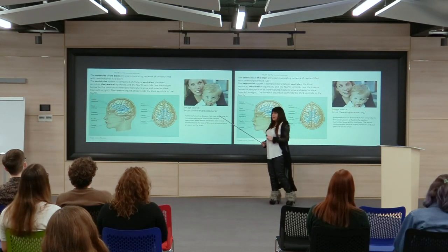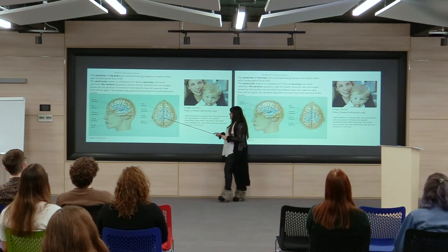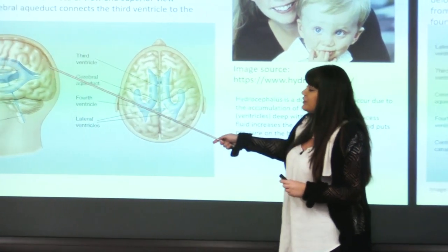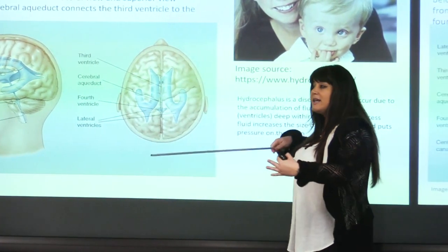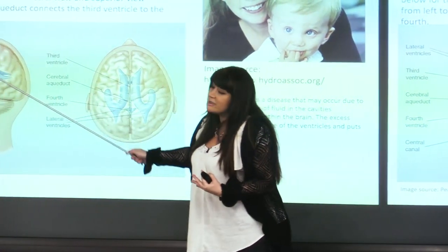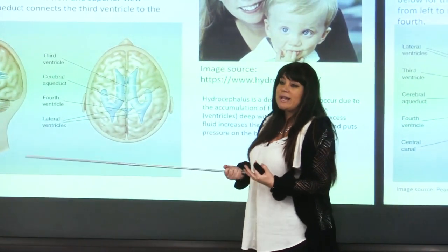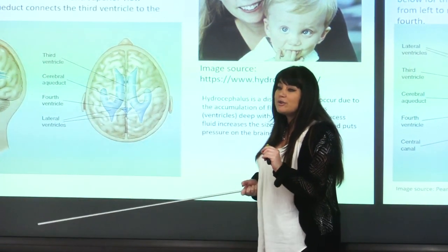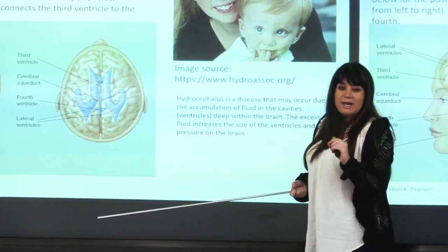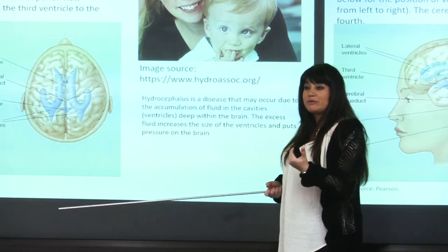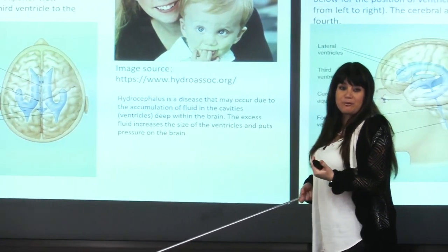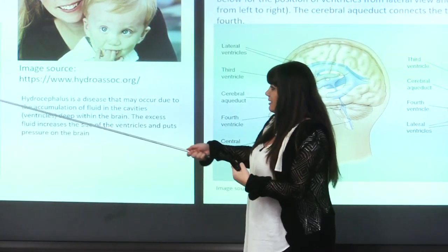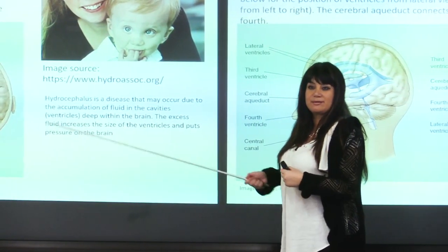Another important structure — maybe more essential for understanding brain anatomy — is the ventricular system, which consists of brain cavities. These cavities are filled with a specific brain fluid called cerebrospinal fluid. It functions in protection and facilitation of the brain. For example, the removal of metabolic waste from brain tissues occurs through interaction with this fluid.